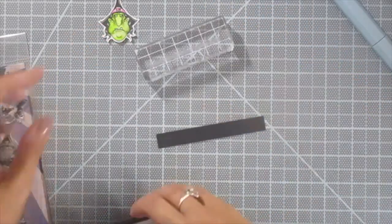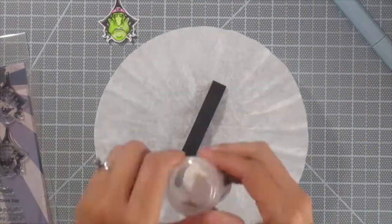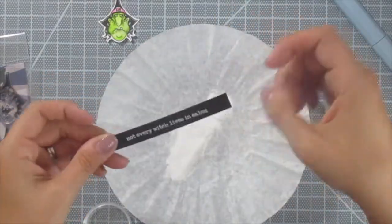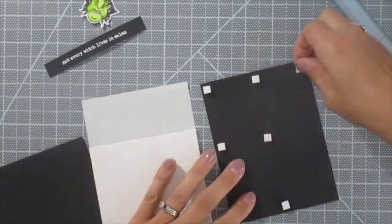So now I'm just going to add a sentiment from that same set. I just cut a little strip of black paper and I'm going to heat emboss it with some white powder. I just used some watermark ink to stamp it on there and then I heat embossed it.